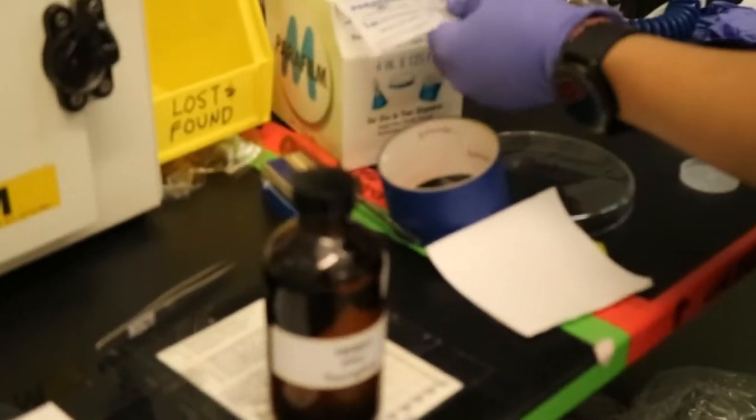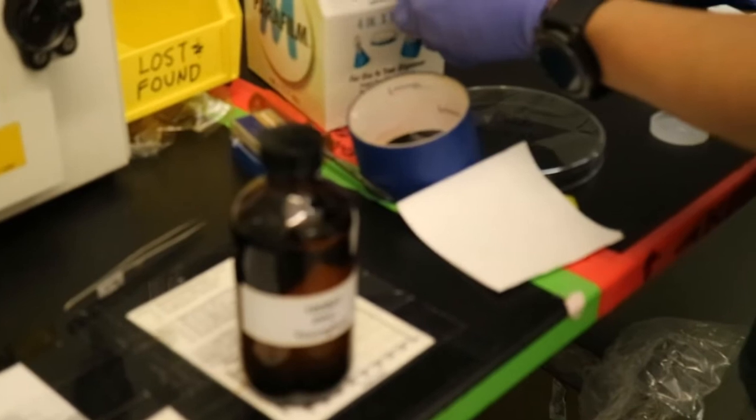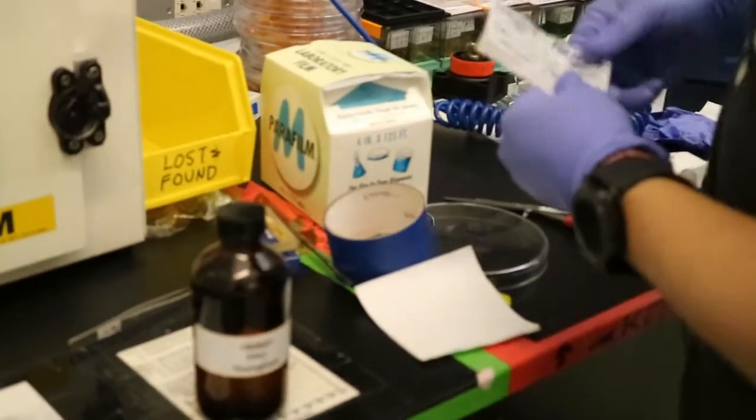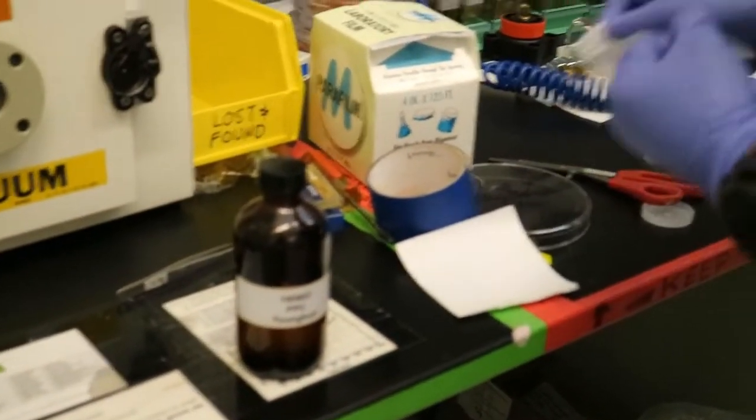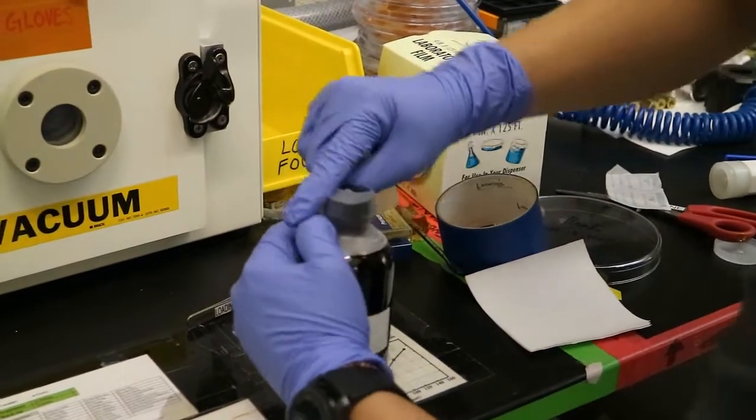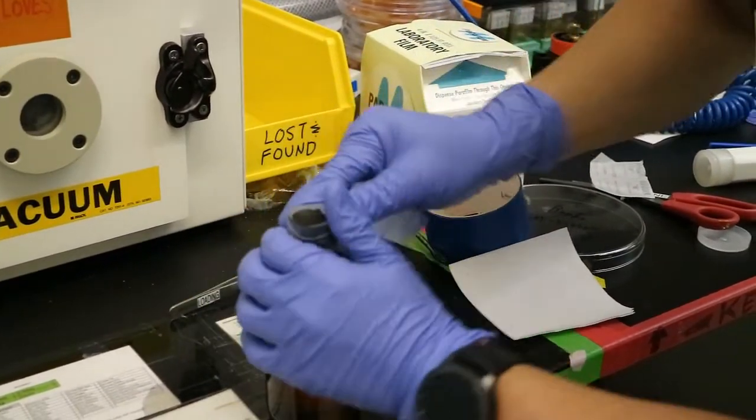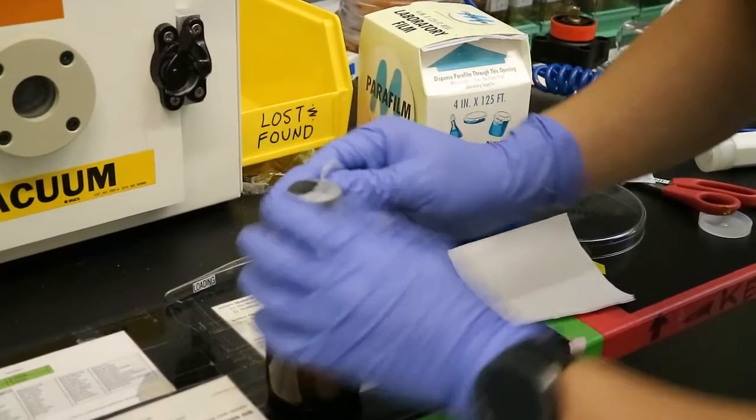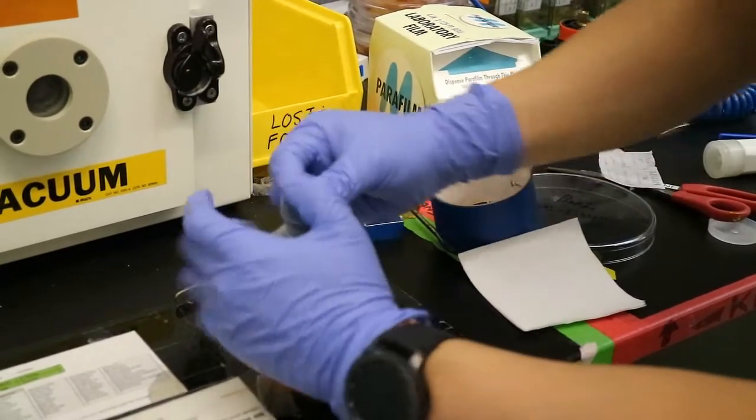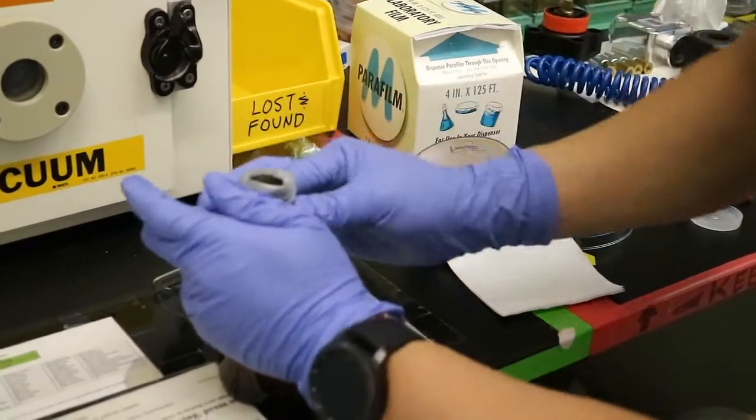And then move on to the next room and seal the bottle. So using the parafilm, just seal the neck of the bottle like this way.